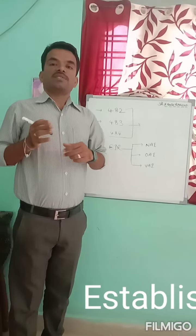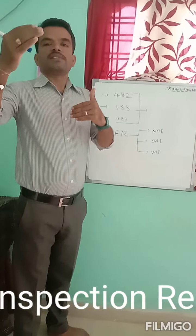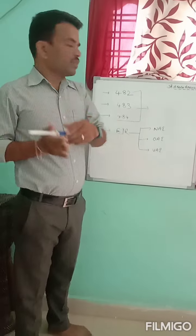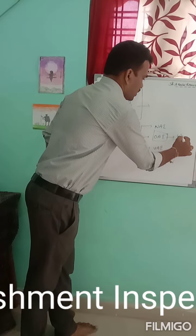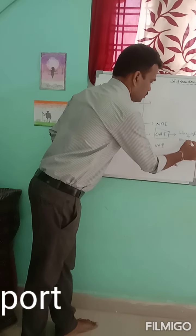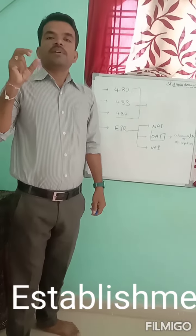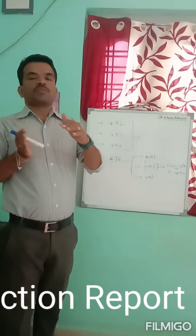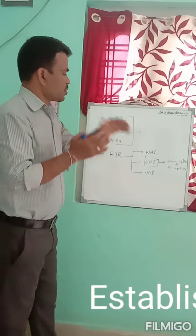OAI means Official Action Indicated. This means they are not satisfied with the observations found and the responses are not acceptable. Based on that, they will give an OAI — Official Action Indicated — and based on this they will issue warning letters or a re-inspection schedule. When they find abnormalities and are not satisfied, they will issue the 483 form. If the observations are not resolved, they will issue a warning letter, and if still not satisfied, there is a chance to revisit and re-inspect the site.